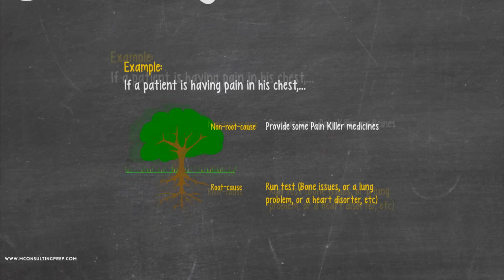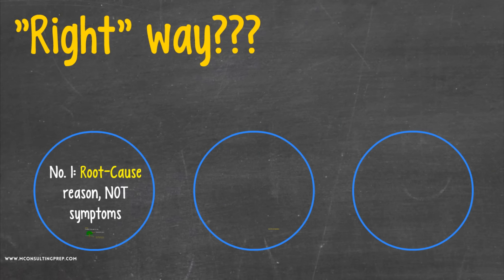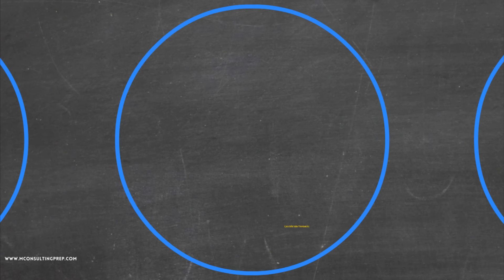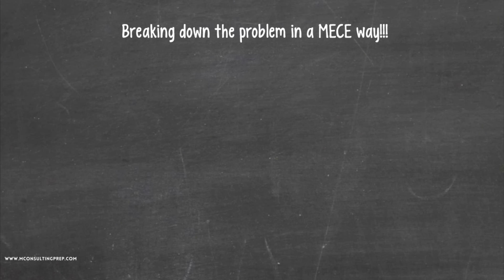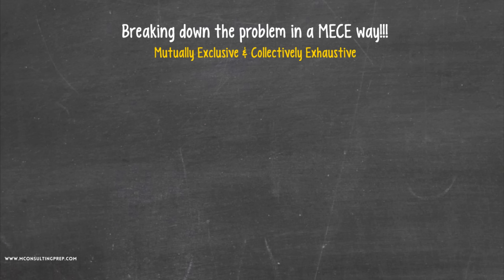Now that we know how to find the root cause, the next thing is to make sure we can identify all root causes. That leads us to number two: a good method will break down the big problem into smaller pieces in a MECE way. MECE stands for mutually exclusive and collectively exhaustive, which in simple language means two things.